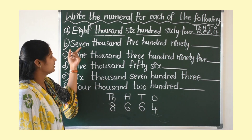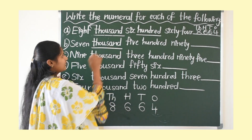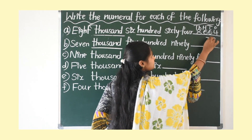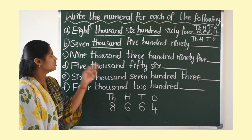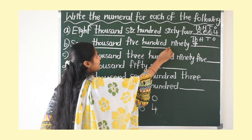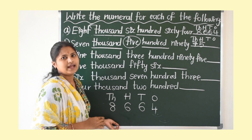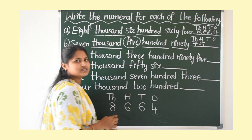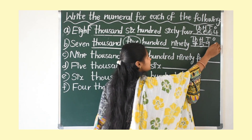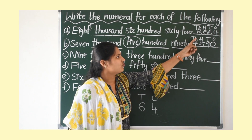Let's see the next question: seven thousand five hundred ninety. The number name started with 1000's, so we write 4 place values: 1's, 10's, 100's, and 1000's. How many 1000's? 7000 — write 7. How many 100's? 500's — write 5 in the 100's place. 90 means how many 10's make 90? 9 tens make 90. There are no 1's, so write 0 in the 1's place. Answer: 7590.